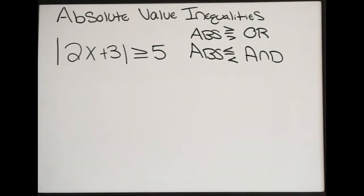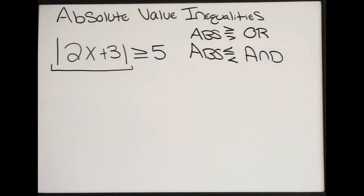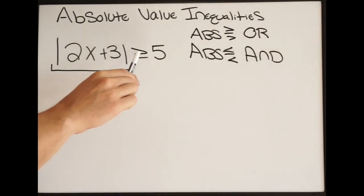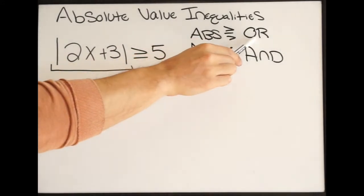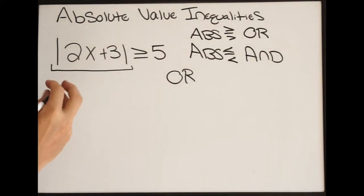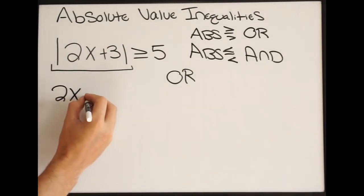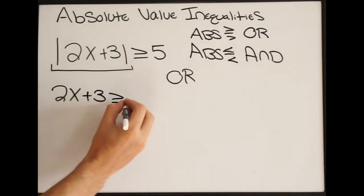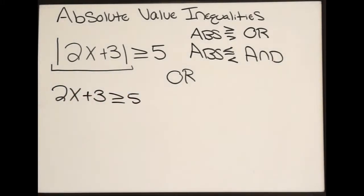Our first step whenever solving these absolute value inequalities is to make sure that you isolate the absolute value. In this first example, we don't have to do anything because the absolute value is already isolated for us. So at this point, we look at our inequality and notice that our absolute value is greater than or equal to — so in this case it's going to be a disjunction, meaning we're going to use OR as our separator. You're going to write out two different inequalities. The first one you write as is, so exactly as you see it: 2x plus 3 greater than or equal to 5. Notice that I did drop the absolute value bars.